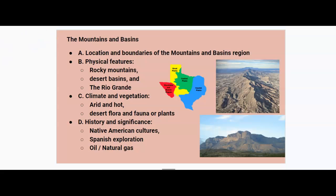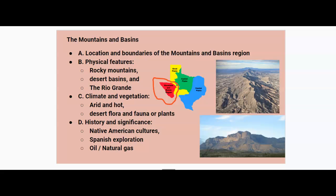Let's start with the Mountains and Basins region. It's located way out on the tip of Texas, closest to New Mexico and Arizona. That red area on the map is the Mountains and Basins region, bordering Mexico along the Rio Grande. Its physical features include rocky mountainous areas, desert basins, and the Rio Grande. In terms of climate and vegetation, it has an arid, hot climate — a high mountain desert — with desert flora and fauna.